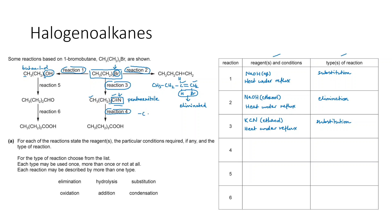In reaction four, nitriles undergo hydrolysis: the triple bond breaks and the nitrile is converted into a carboxylic acid group, while nitrogen is converted into ammonia. Since the product here is a carboxylic acid rather than its salt, we use acid conditions — for example HCl — with heat under reflux.